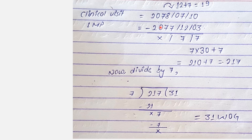For this exercise, clinical visit is 2078-7-10 and LMP is 2077-12-03. We subtract: for days, 10 minus 3 gives 7 days. For months, we need to subtract 12 from 7, but 7 is less than 12, so we need to borrow from the year.